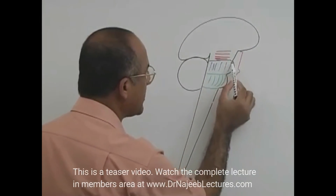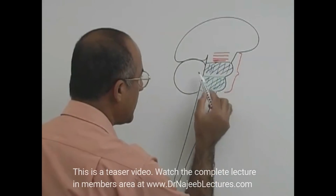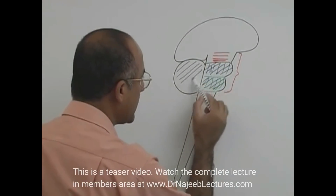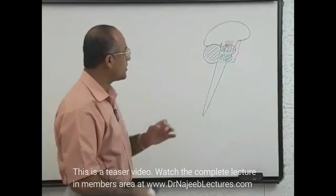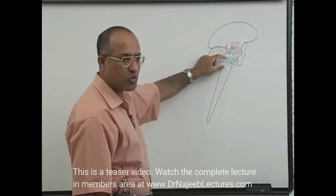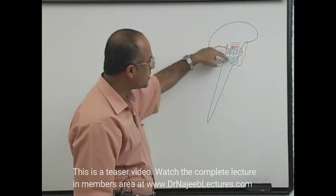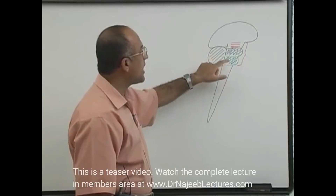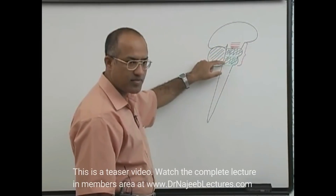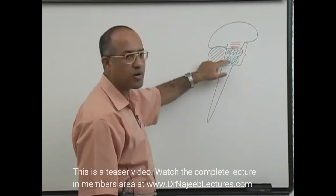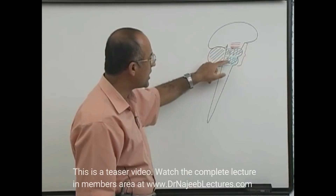The medulla belongs to the rhombencephalon, meaning the hindbrain. When we talk about the hindbrain, midbrain is not part of it — the hindbrain has pons, medulla, and cerebellum. It is worth repeating: medulla oblongata is included within the brainstem, which has midbrain, pons, and medulla; and at the same time medulla is part of the rhombencephalon, whose three structures are pons, medulla, and cerebellum.